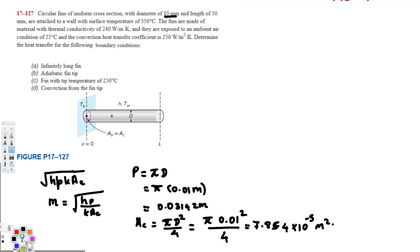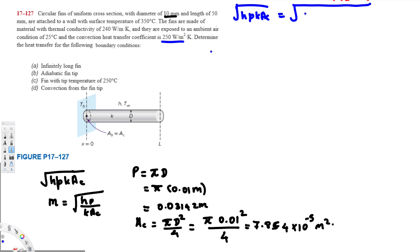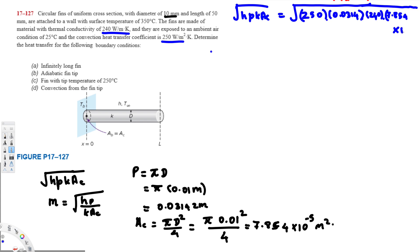Now let's calculate √(hpkAc). Plugging in: h = 250, perimeter = 0.03142, thermal conductivity k = 240, and area = 7.854 × 10⁻⁵. Calculating this gives 0.3848 watts per degree Celsius.